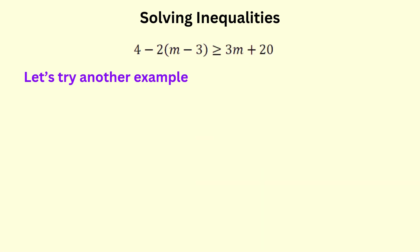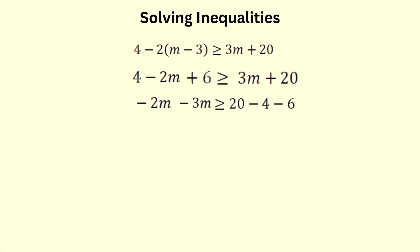Just like with solving equations, we first need to expand the brackets. We have 4, then we will multiply each term in the bracket by negative 2. Negative 2 times m is negative 2m. Negative 2 times negative 3 is positive 6. On the right, it's still 3m plus 20. Just like we do when solving equations, we group the like terms. We will group 3m to the left, so it will change its sign to negative 3m. If we group the 4 and the 6 to the left, they change signs to minus 4 and minus 6.